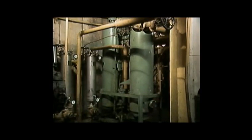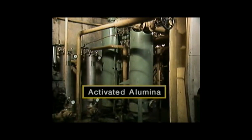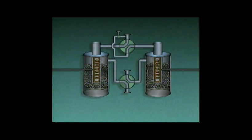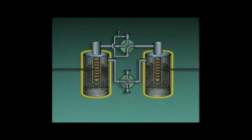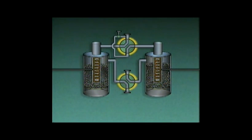Another auxiliary device that may be used along with a demister when extremely dry gas is required is a desiccant dryer. A desiccant dryer uses chemicals called desiccants to remove moisture from compressed gas. Two commonly used desiccants are silica gel and activated alumina. A typical desiccant dryer contains desiccant in two tanks and also has a gas inlet, a gas outlet, a waste gas outlet, two heating coils, and two four-way or reversing valves.